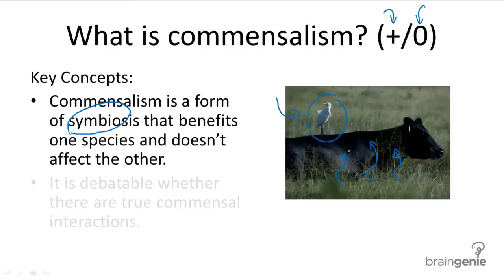You can clearly see that the egret benefits from this relationship because it is getting food, whereas the cattle just seem indifferent from the egret sitting there. So clearly this seems like a commensal relationship.